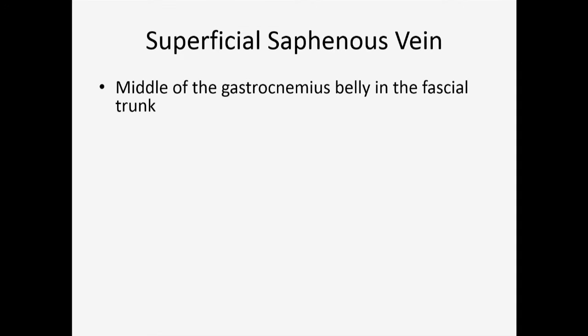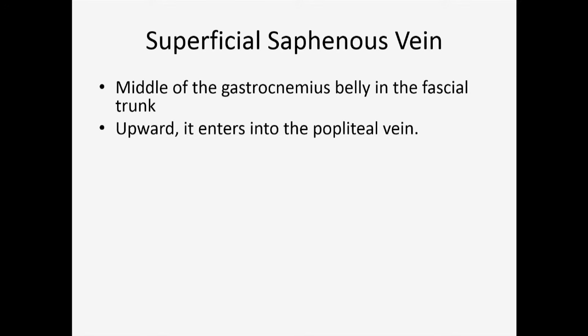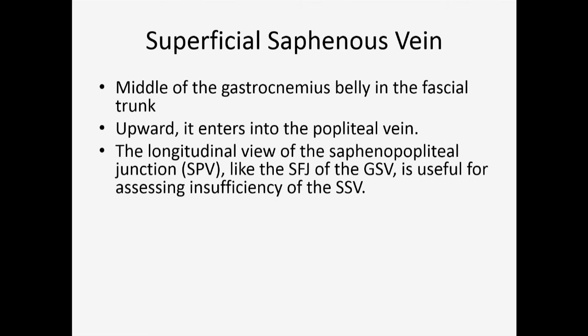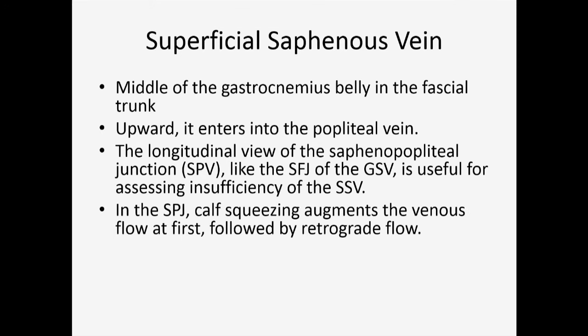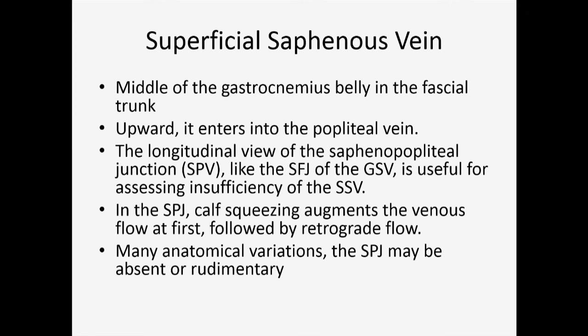The small saphenous vein is at the middle of the gastrocnemius belly in the fascial trunk, going upward and entering the popliteal vein. We start from proximal to distal evaluation of the small saphenous vein at the saphenopopliteal junction to assess for insufficiency. At the saphenopopliteal junction, calf squeezing with the blood pressure cuff augments venous flow first, followed by retrograde flow. There are many anatomic variations in the distal part of the small saphenous vein, and the saphenopopliteal junction may not always be present.